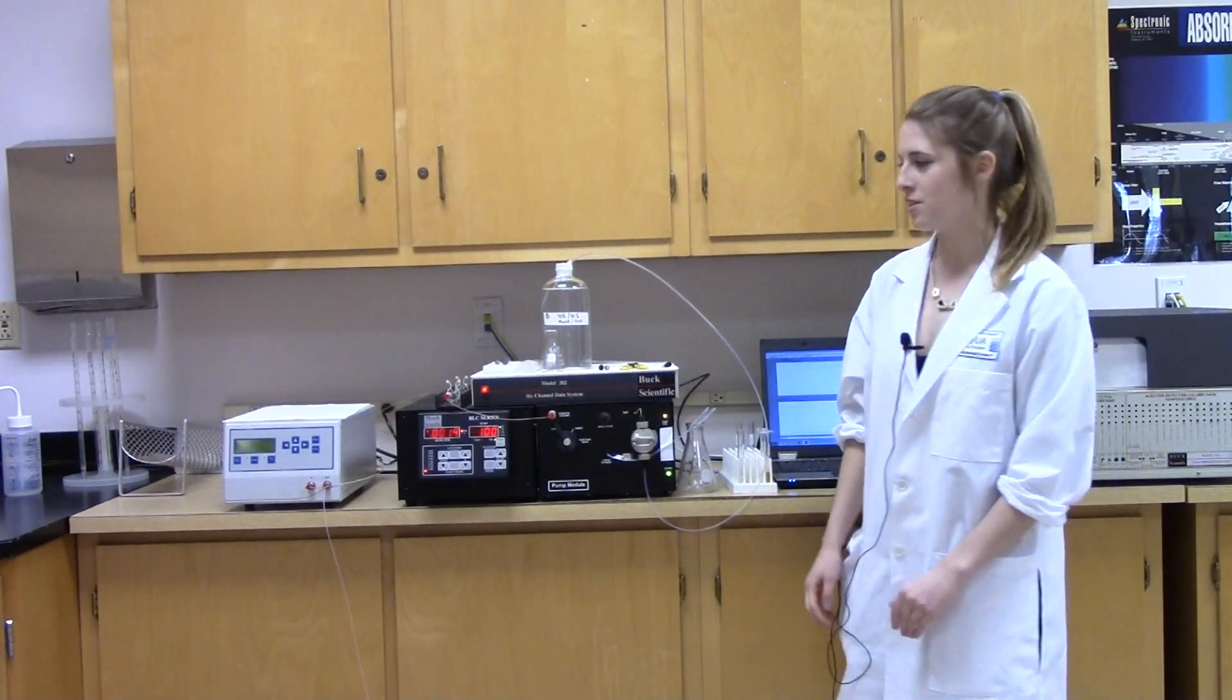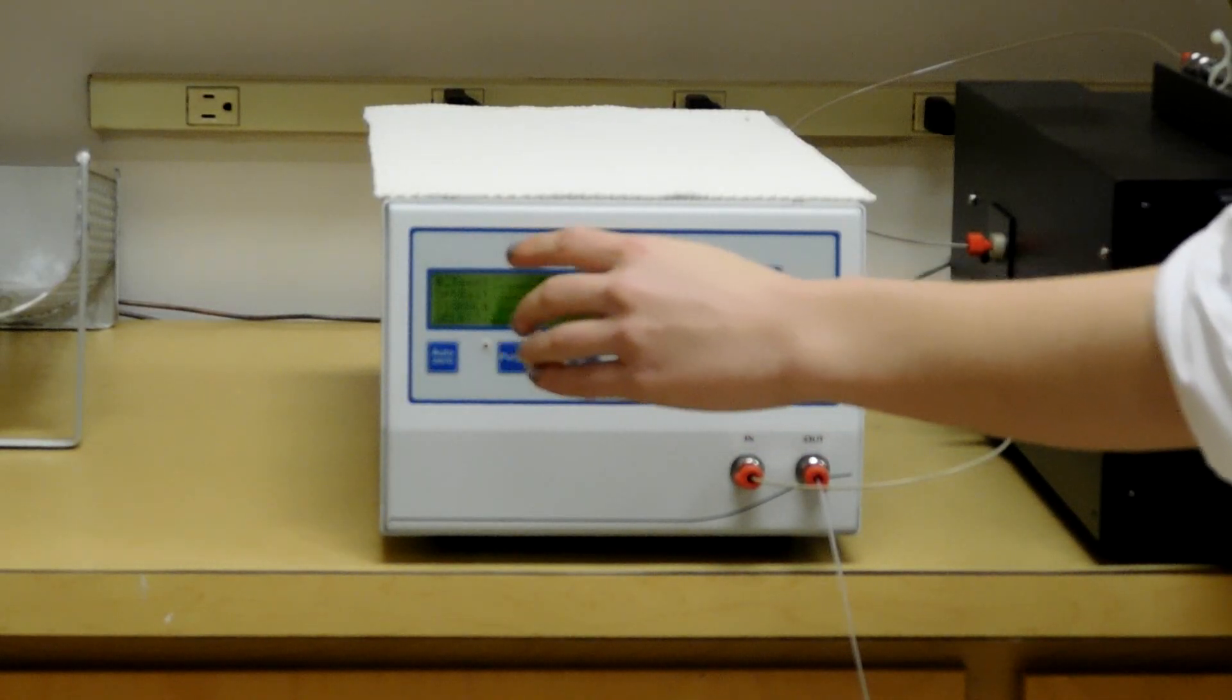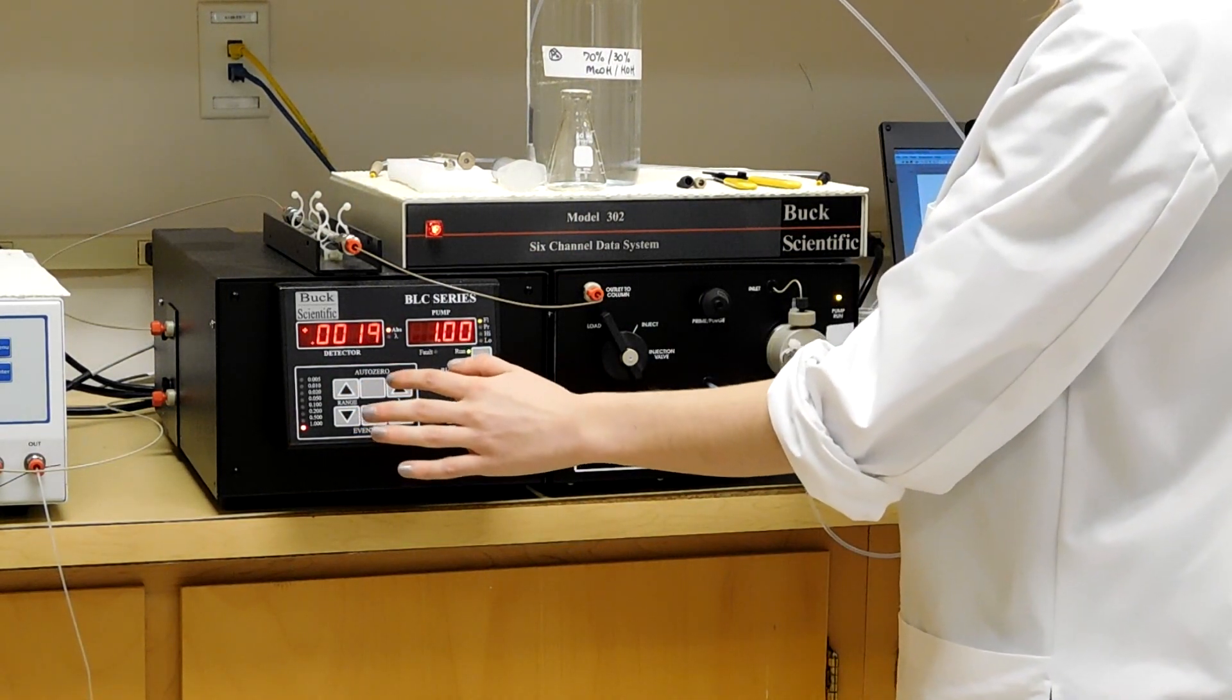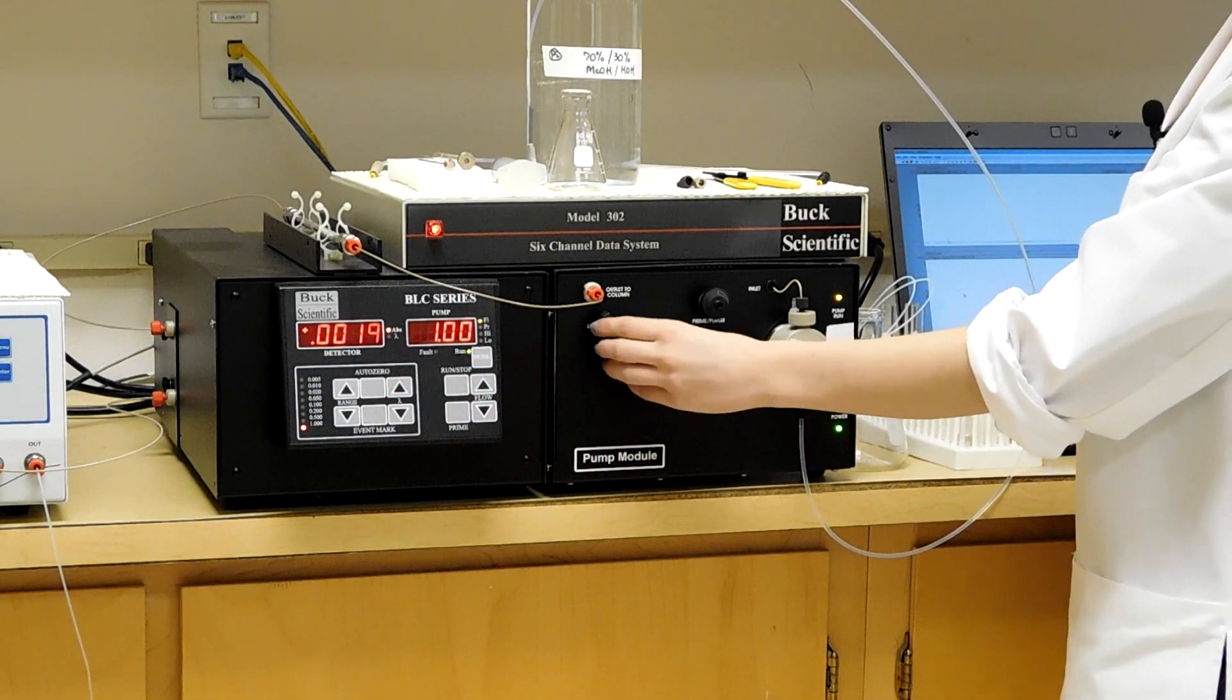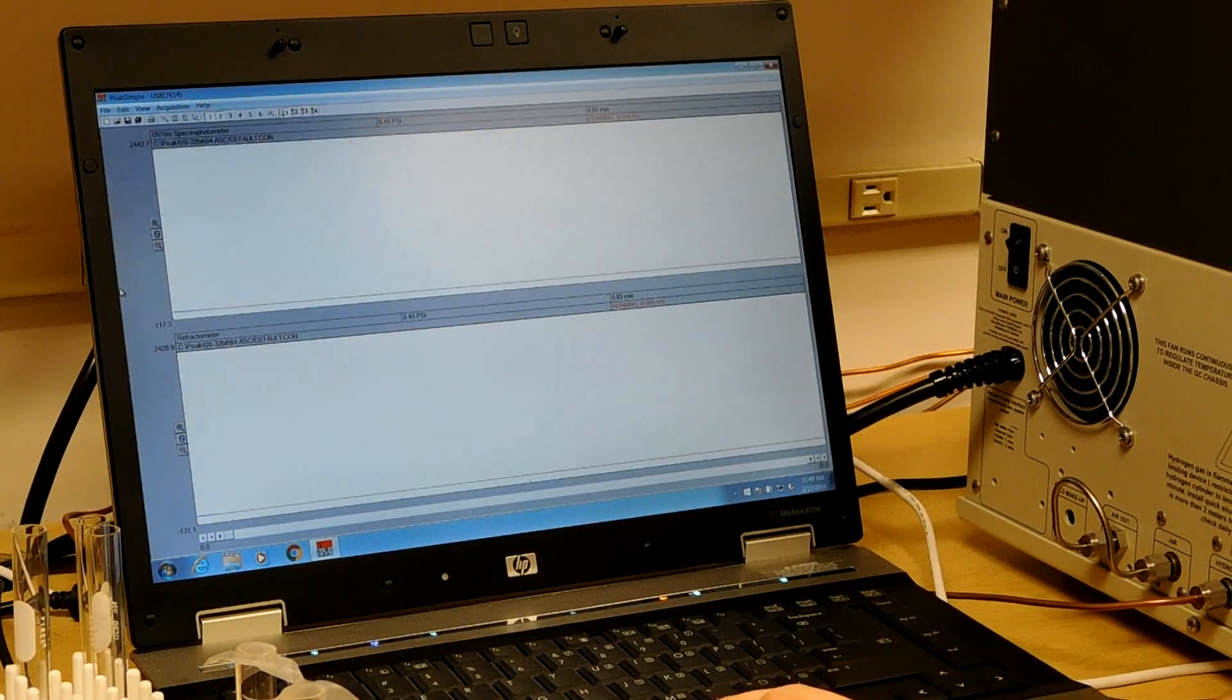In order to do this, you go over to the first box, you press auto zero, go to the second box, and you hit auto zero. You switch the load position to the inject position, and you go over to the computer, and hit auto zero, and auto zero. It's the zero button in between the magnifying glasses.